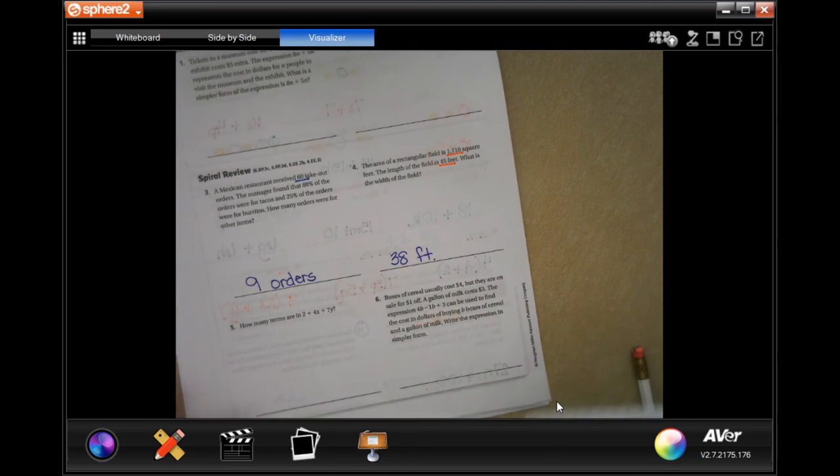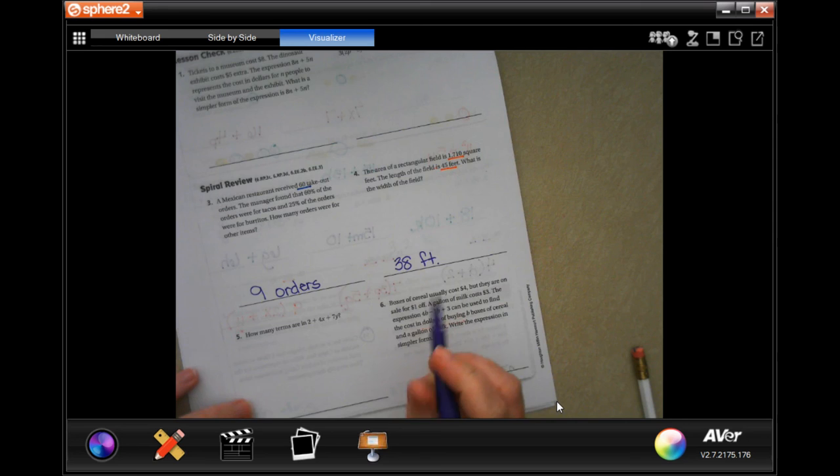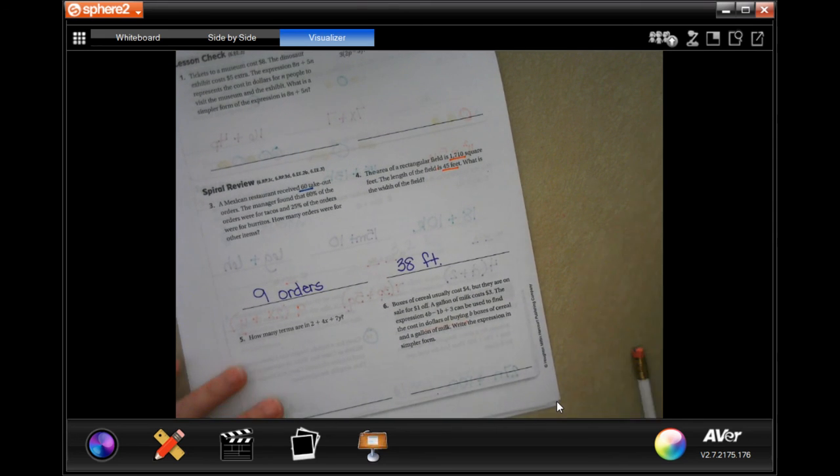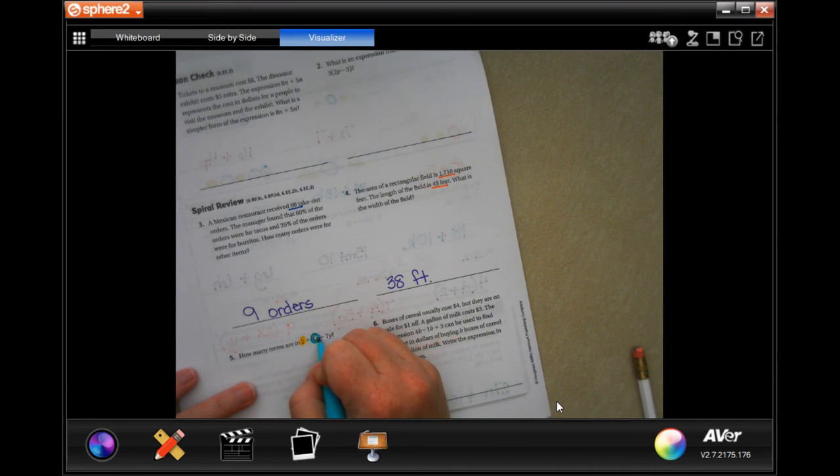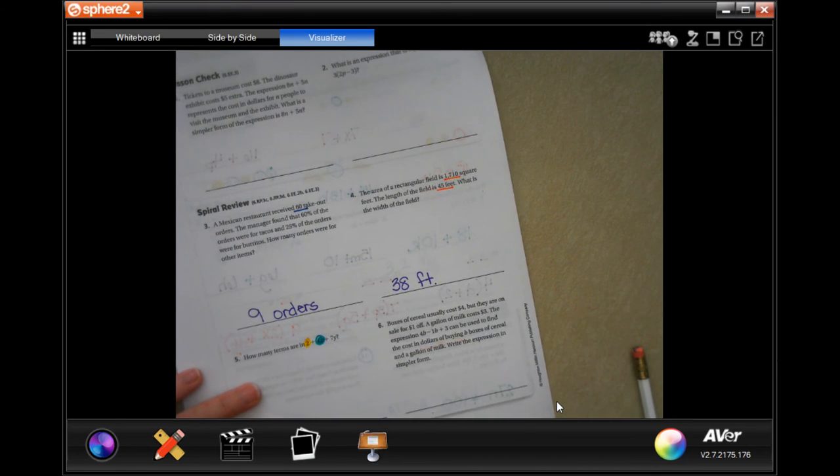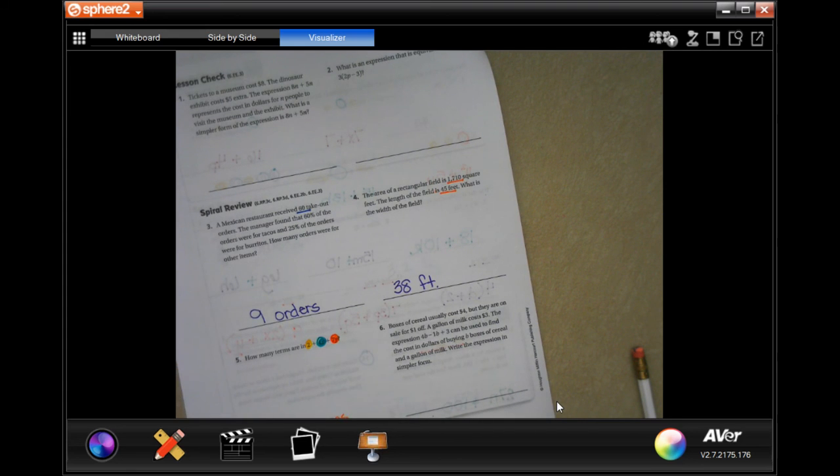Now, how many terms are in 2 plus 4x plus 7y? Well, let's see. We have 1, 2, and this is a different letter, so it's 3. 3 terms. Boom.